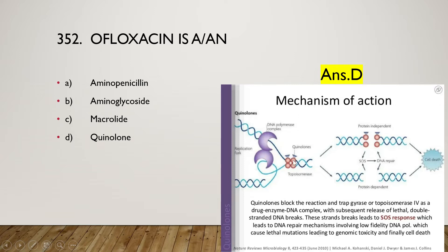Quinolones attach to DNA gyrase or topoisomerase, which are responsible for removal of positive supercoiling. They break the double-stranded DNA, producing double-stranded breaks. The strand break leads to an SOS response involving low-fidelity DNA polymerase, causing lethal mutations leading to genomic toxicity and finally cell death.